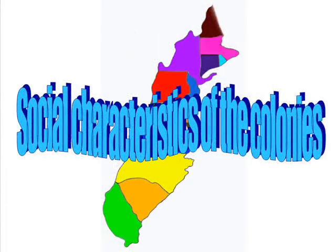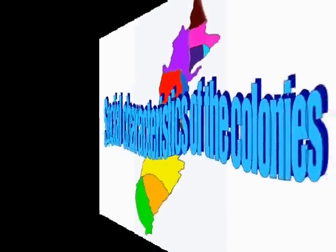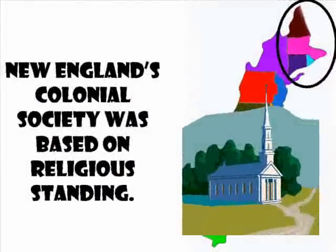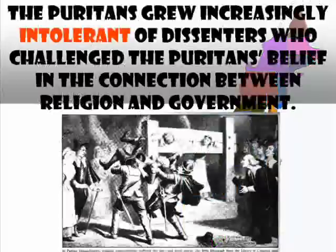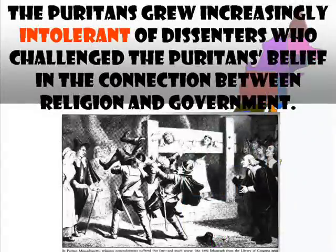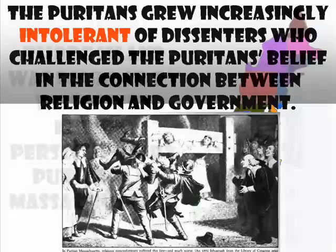Social Characteristics of the Colonies. New England's colonial society was based on religious standing. The Puritans grew increasingly intolerant of dissenters who challenged the Puritans' belief in the connection between religion and government.